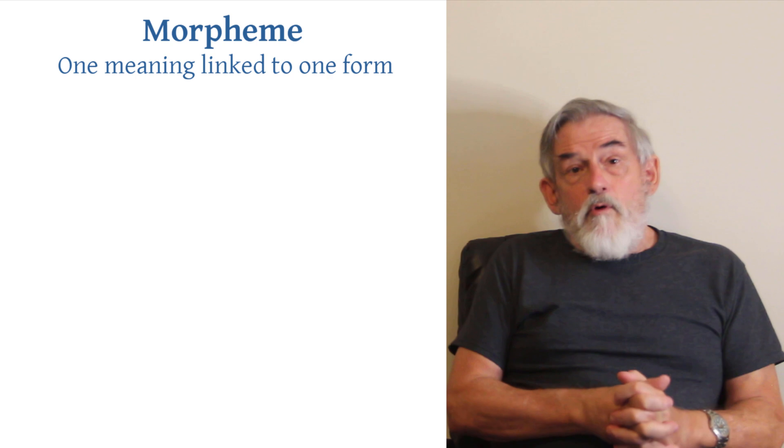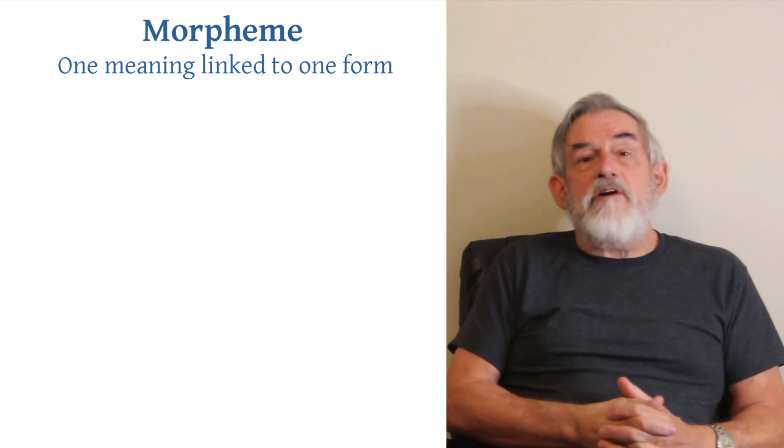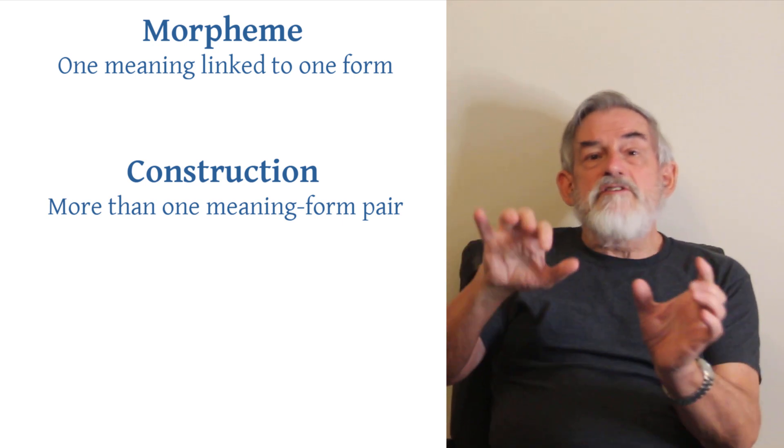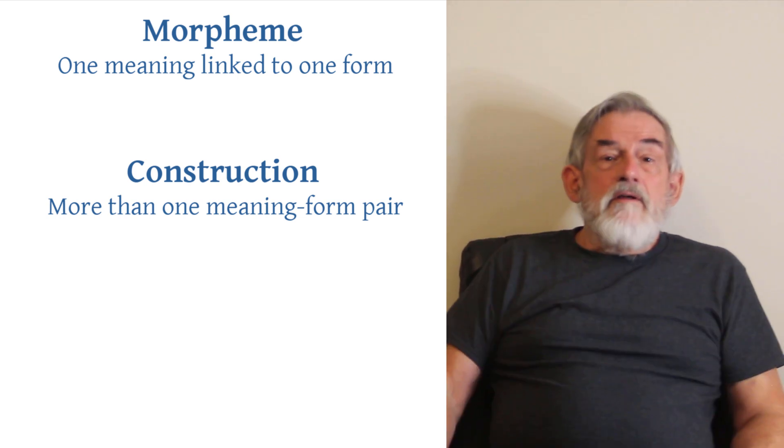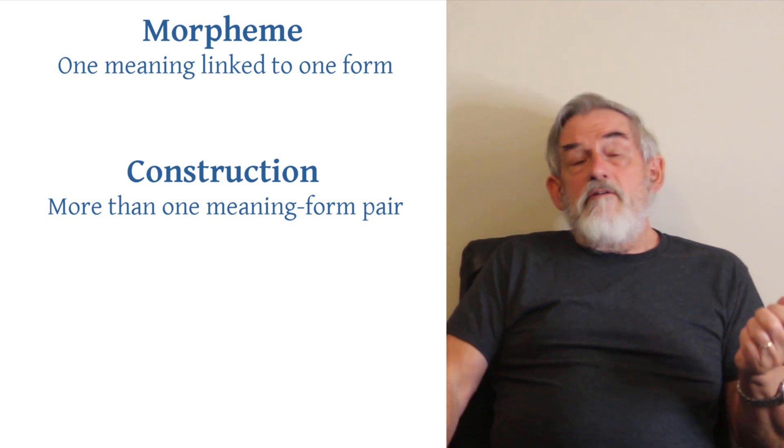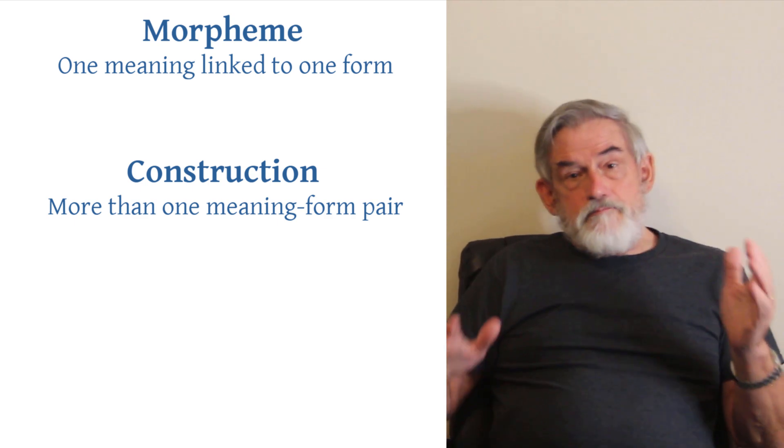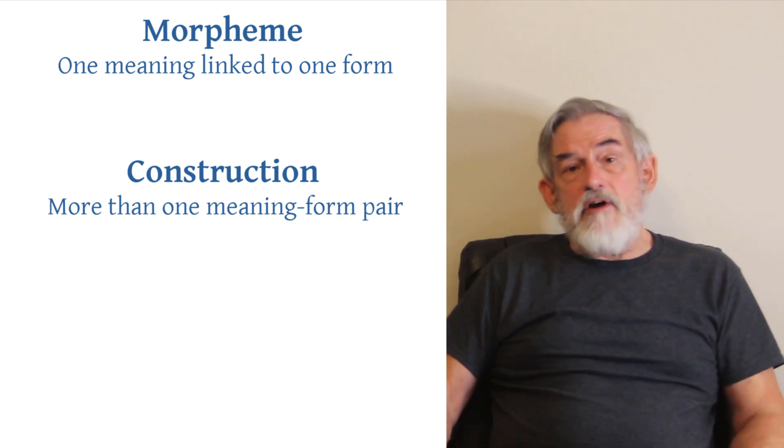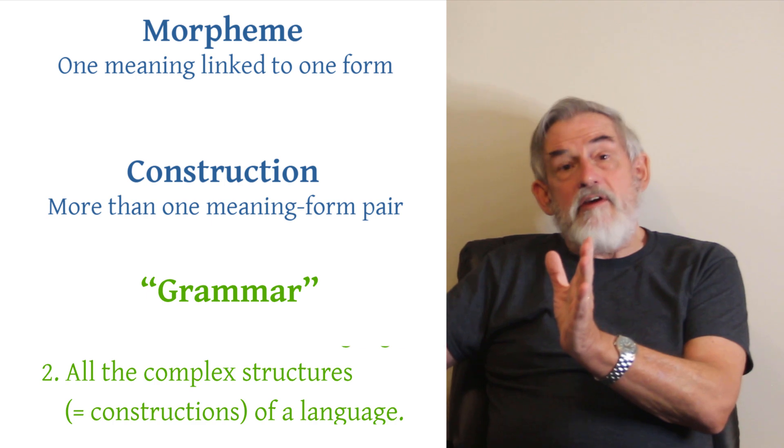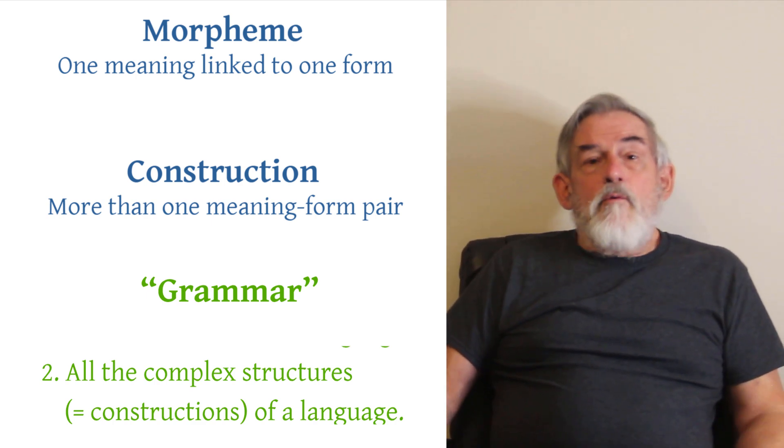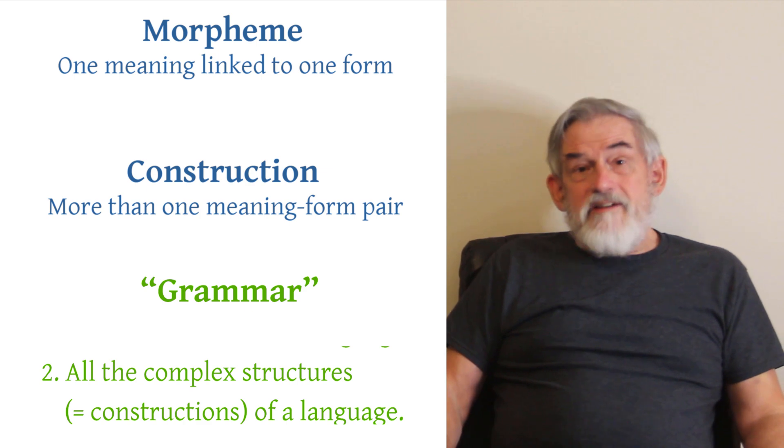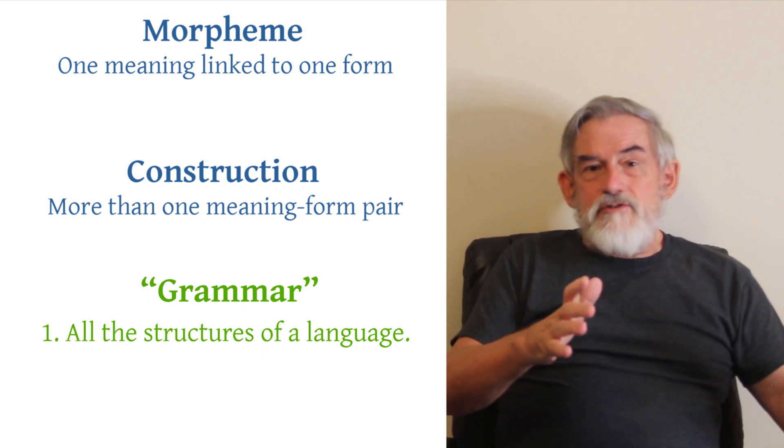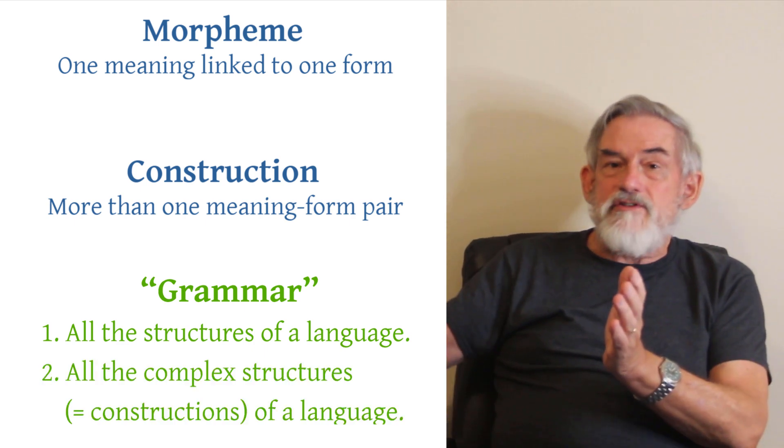When you have more than one morpheme involved in a symbolic structure, we tend to call those constructions. And that makes sense, because you are constructing, you're putting structures with each other. One definition that a good many people use of the word grammar is that morphemes are not grammatical structures, but anything that is a construction is a grammatical structure. There is a grammar, rules for how the things go together. That's a useful way to talk, though it's not the only way to talk about what grammar means. We've already seen one meaning of grammar, which is all of the structures in a language. Well, this would be all of the complex structures in a language.